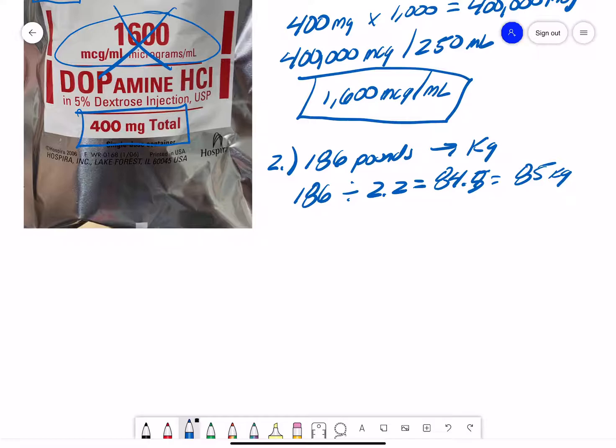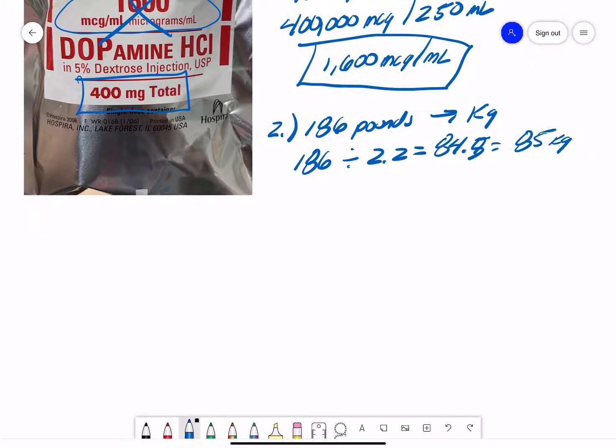So I'm going to show you another way that isn't as accurate as dividing by 2.2, but it'll get you pretty close. And to do that, we take 186 divided by 2, which equals 93.